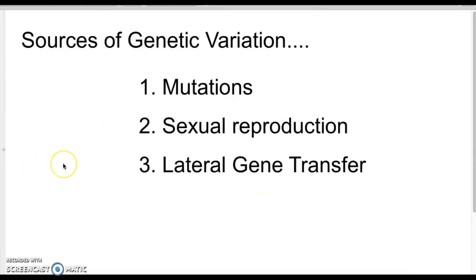We need to remember what causes genetic variation in a population — why we all vary and why we are unique in our genes and phenotypes. There are three sources: mutations, sexual reproduction, and lateral gene transfer. We're going to talk about each of those now.